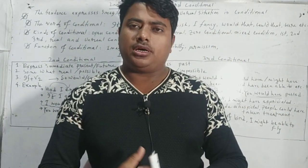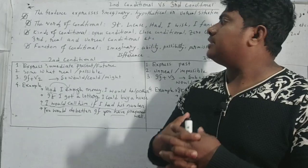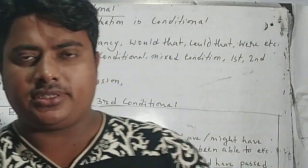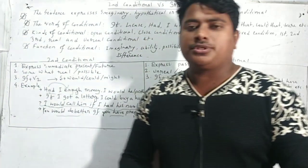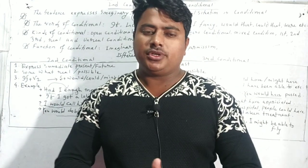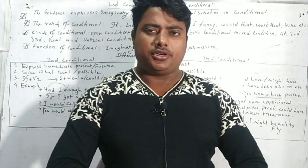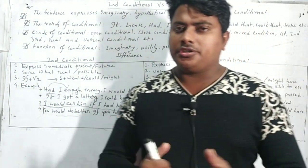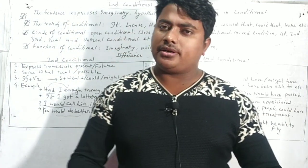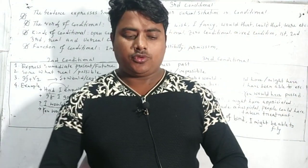Now, the words of conditional in English grammar. We do some conditions by helping some words. Though 'if' is common words, but other words express the conditions such as: if, in case, had, I wish, I fancy, would that, could that. Sometimes we use 'or' to show conditions, to express conditions. Now the kinds of conditions in English grammar. There are different types of conditions. All conditions are divided into two parts: open conditionals and closed conditionals. These conditionals may be zero conditional, mixed conditional, first conditional, second conditional, third conditional. Some conditionals are real and some conditionals are unreal.